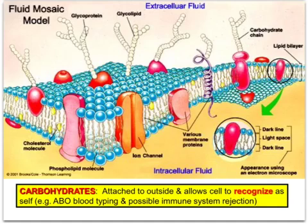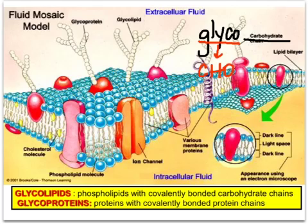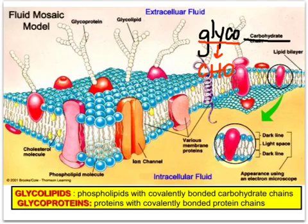There are two types of carbohydrates on the cell membrane. The first is a glycolipid — 'glyco' refers to the carbohydrate, so a glycolipid is a carbohydrate attached to a lipid. You can see here there's a carbohydrate chain attached to a phospholipid. The second is a glycoprotein — a carbohydrate attached to a protein. Remember that these are macromolecules and are therefore covalently bonded together.